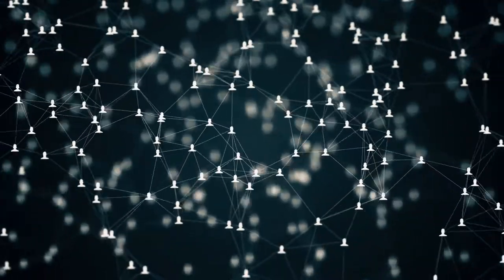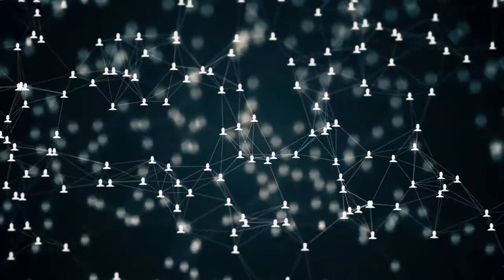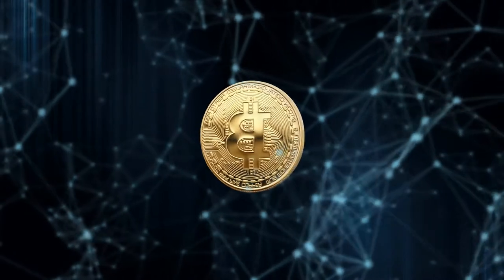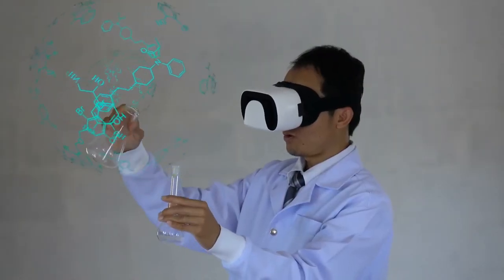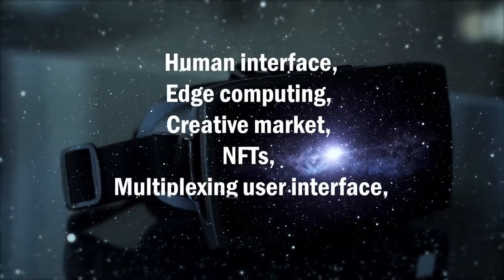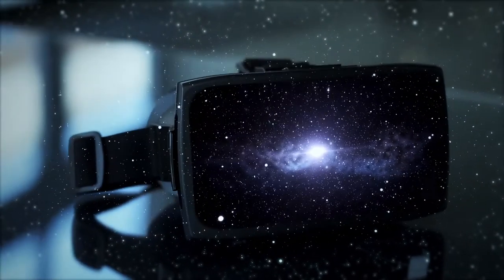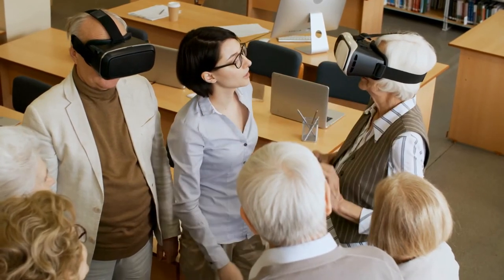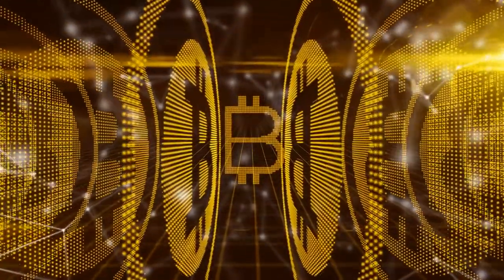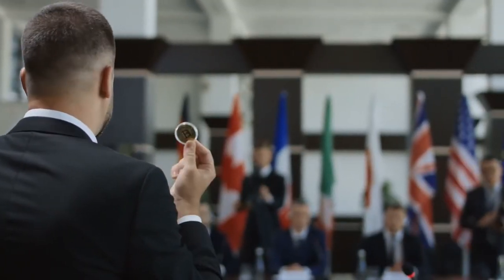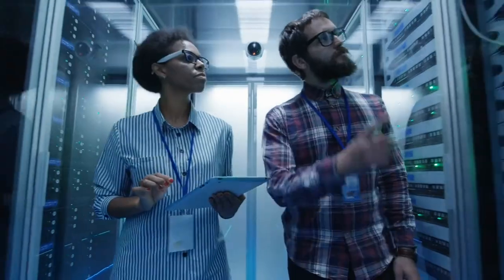Sixth, basic technology: Web 3 technology includes blockchain, decentralized sovereign organizations and cryptocurrencies. The crypto society became the globe's first decentralized Web 3 initiative. The Metaverse, on the other hand, is based on augmented reality, human interface, edge computing, creative marketing, NFTs, multiplexing user interface, 5G and Wi-Fi 6G at the budding stage. Seventh, ownership battle: the goal of Web 3 is to keep the internet out of the hands of corporate monopolies and make it public ownership — Bitcoin is one of the most prominent instances. Tech conglomerates are attempting to purchase Metaverse enterprises to gain control, though analysts predicted that corporate influence of the Meta universe would be difficult.